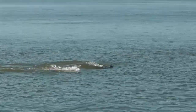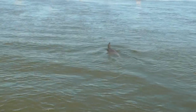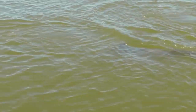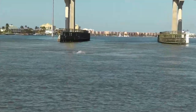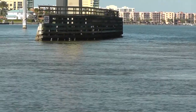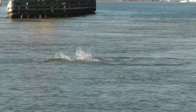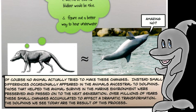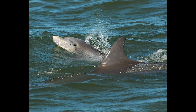Of course, no animal actually tried to make these changes. Instead, small differences occasionally appeared in the animal's ancestors to dolphins. Those that helped the animal survive in the marine environment were preserved and passed on to the next generation. Over millions of years, these small changes accumulated to affect a dramatic transformation, as you see the dolphin on the right. The dolphins we see today are the result of this process.